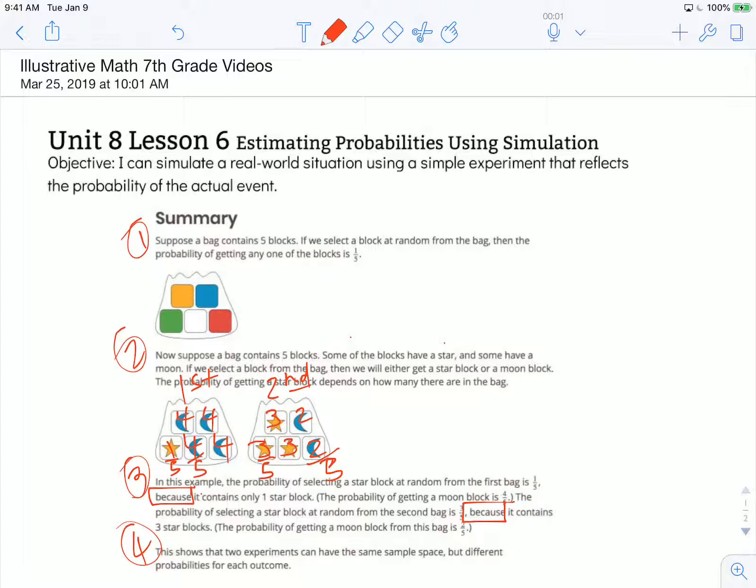Paragraph four. This shows that two experiments can have the same sample space but different probabilities for each outcome. So sample space is, as we know, we've learned, that is the possible outcomes.